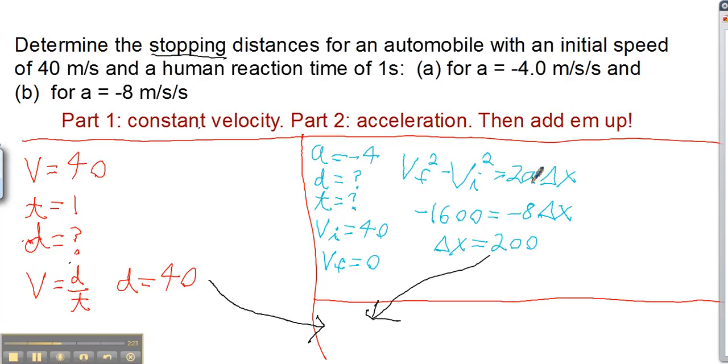Two times negative four gives you the negative eight times delta x, and then you just divide it, pretty easy. You get delta x is 200. It took you 200 meters during the phase when you were breaking to stop.